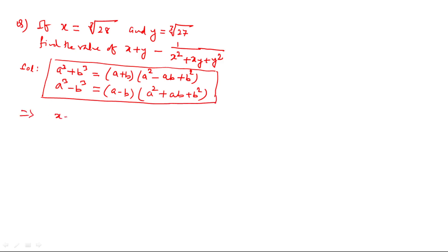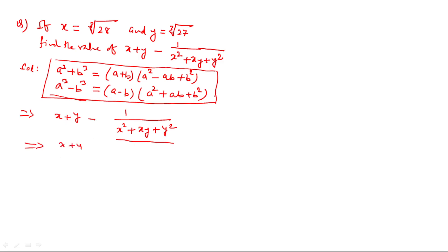We are given x plus y minus 1 divided by x squared plus xy plus y squared. We observe that x squared plus xy plus y squared is already present. If we go for making x cubed minus y cubed, using the formula a cubed minus b cubed equals a minus b times a squared plus ab plus b squared, we can utilize that.